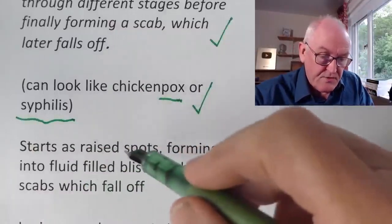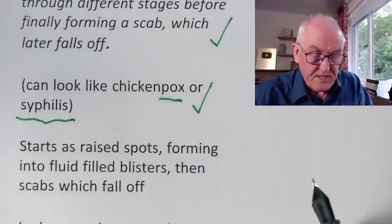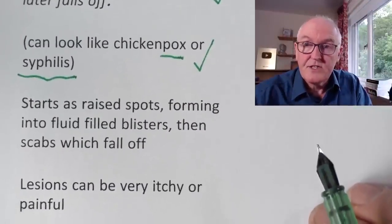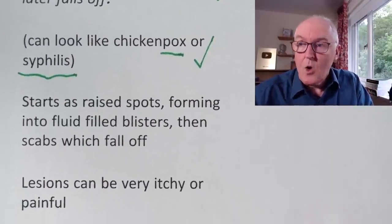The lesions start as raised spots forming into fluid-filled blisters, then scabs which fall off, and can be very itchy or painful. Have a high index of suspicion for these clinical features — suspect monkeypox and contact medical advice or infectious diseases clinics as soon as possible. This disease can be passed on to children and cause severe disease in children, so know how it's transmitted, recognise it early, isolate, and seek medical advice.